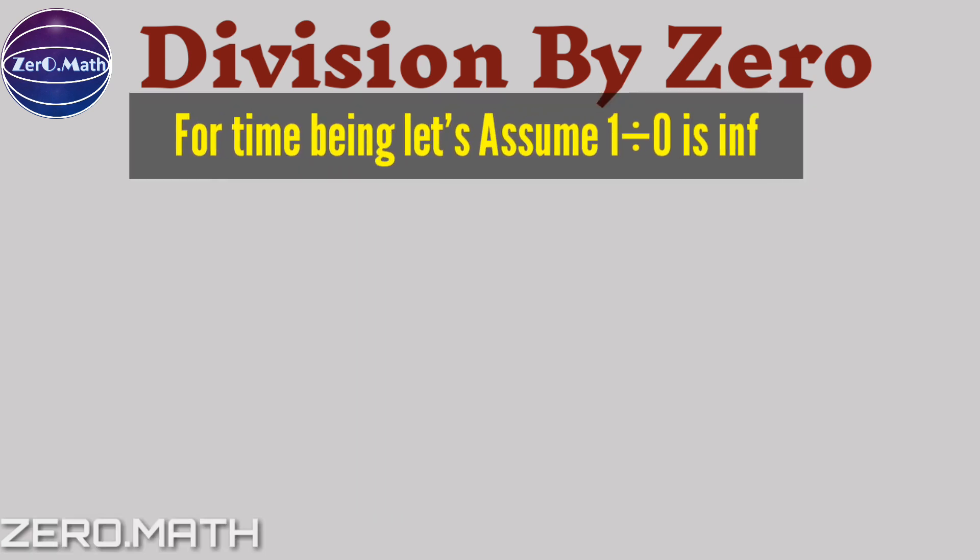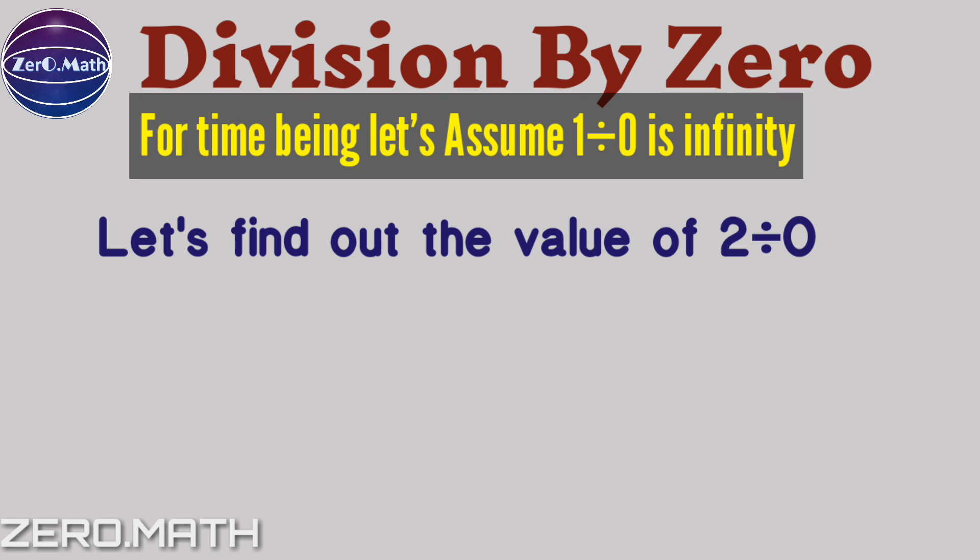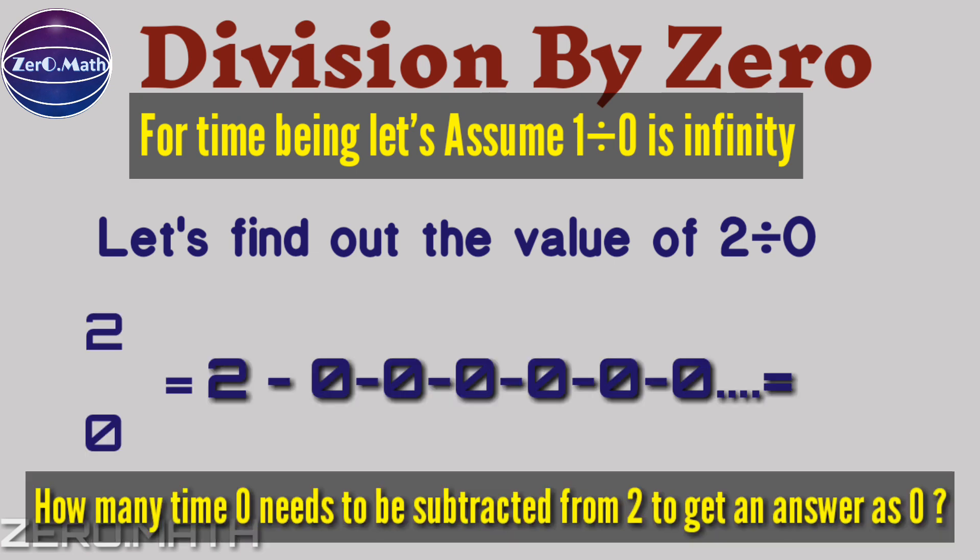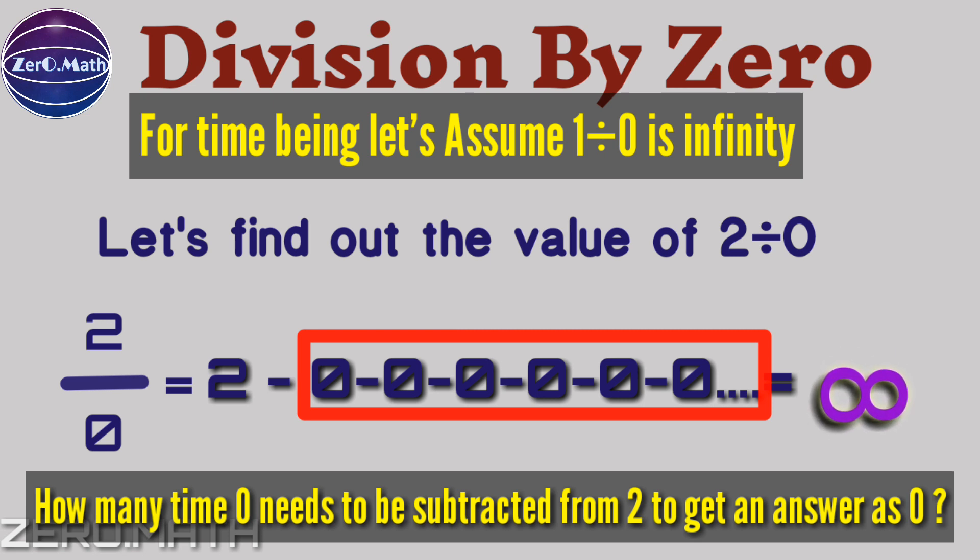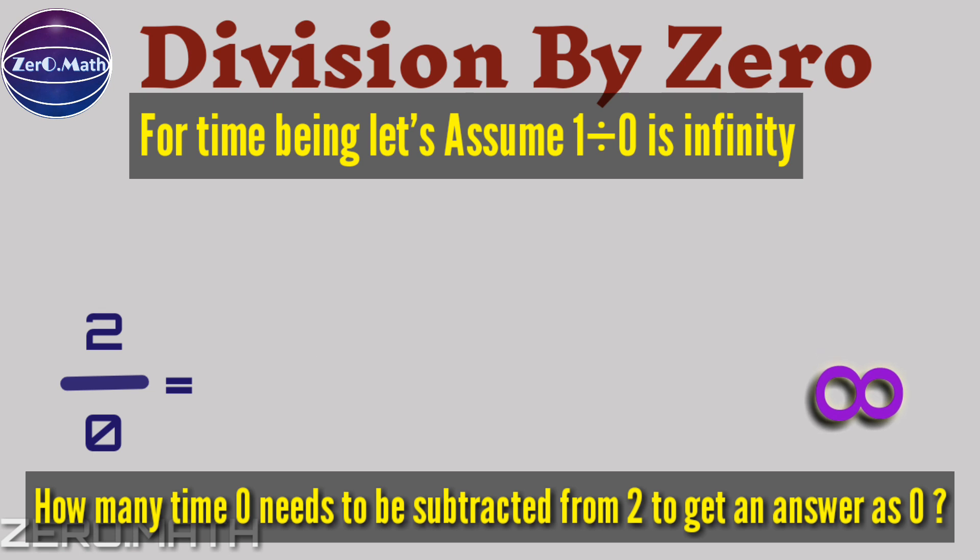For the time being, let's assume 1 by 0 is infinity. Now, let's try to find out the value of 2 by 0. So, how many times does zero need to be subtracted from 2 to get the answer as zero? We have to keep subtracting zero forever. So, the answer is again infinity.